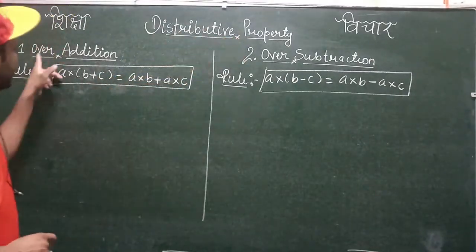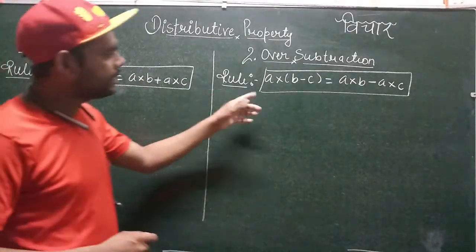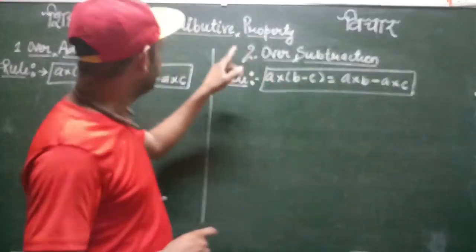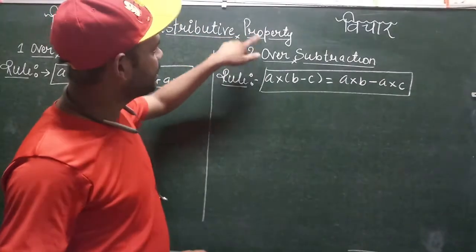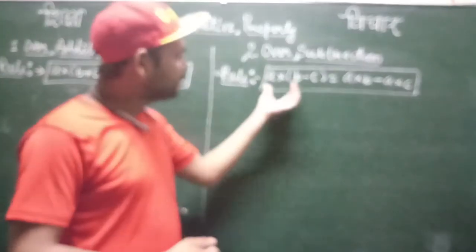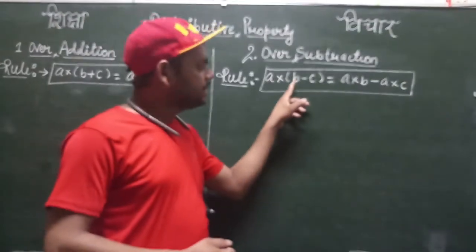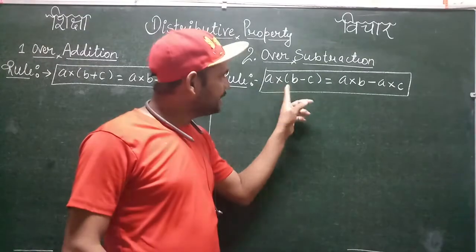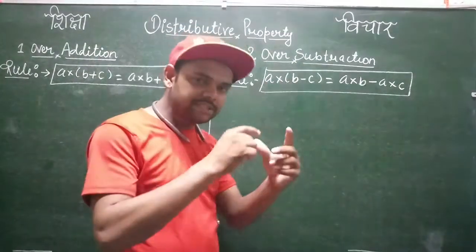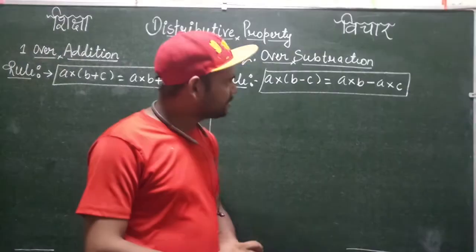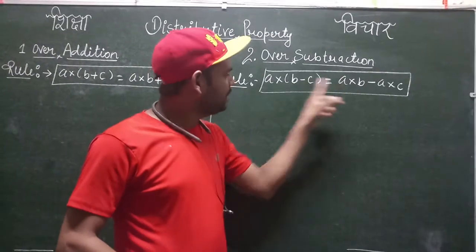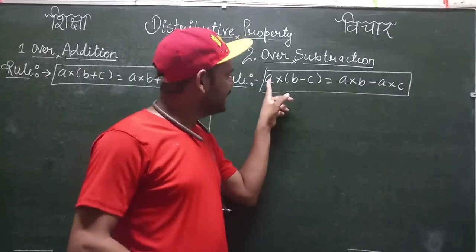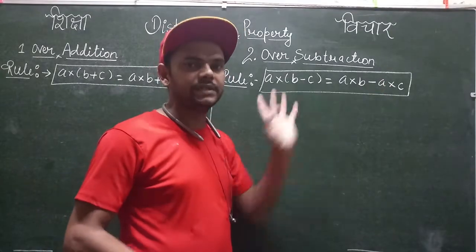In the second case, we have subtraction, so we call it the distributive property over subtraction. Here, a is multiplied by the difference (b − c), and this multiplication distributes over subtraction: a multiplied by b, minus a multiplied by c — that is, a×b minus a×c.